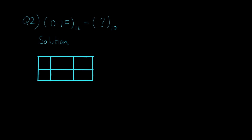Now let's see the second question. In this question we have a fraction value, so we are interested in the fractional part. We first write down the number in the table: 0.7F. In this case we assign positional values starting from left to right of the decimal point, and these positional values are negative numbers starting from minus 1. So 7 is at position minus 1 and F is at position minus 2. Now assigning the positional weights, which are always in the power of 16, we have 16 raised to minus 1 and 16 raised to minus 2.